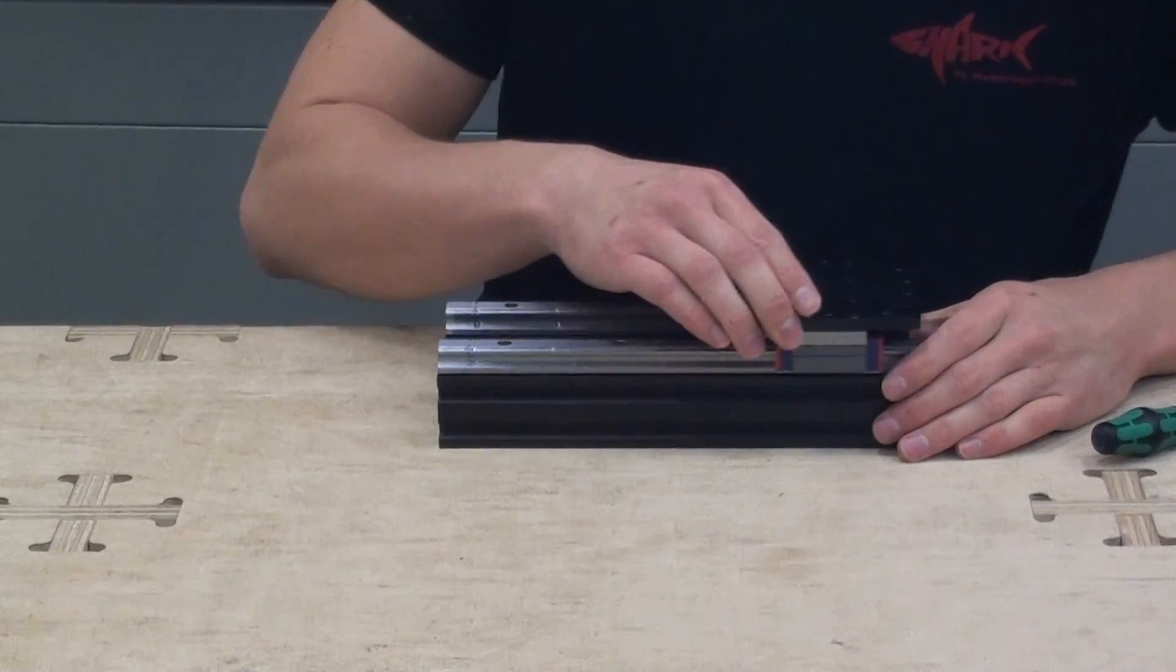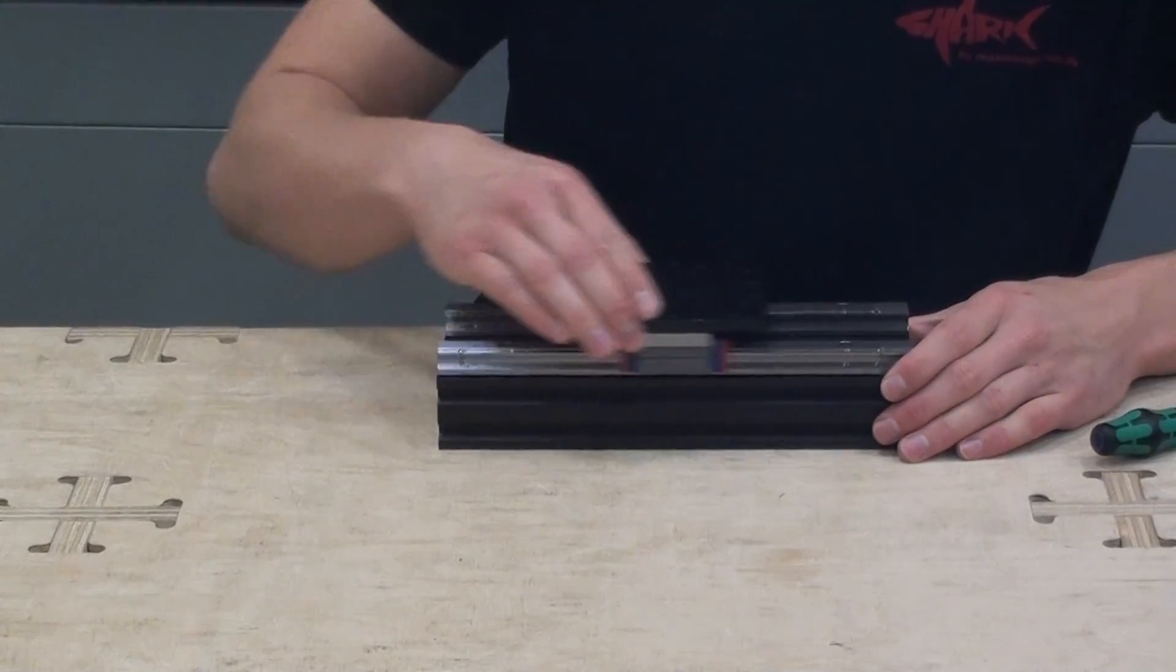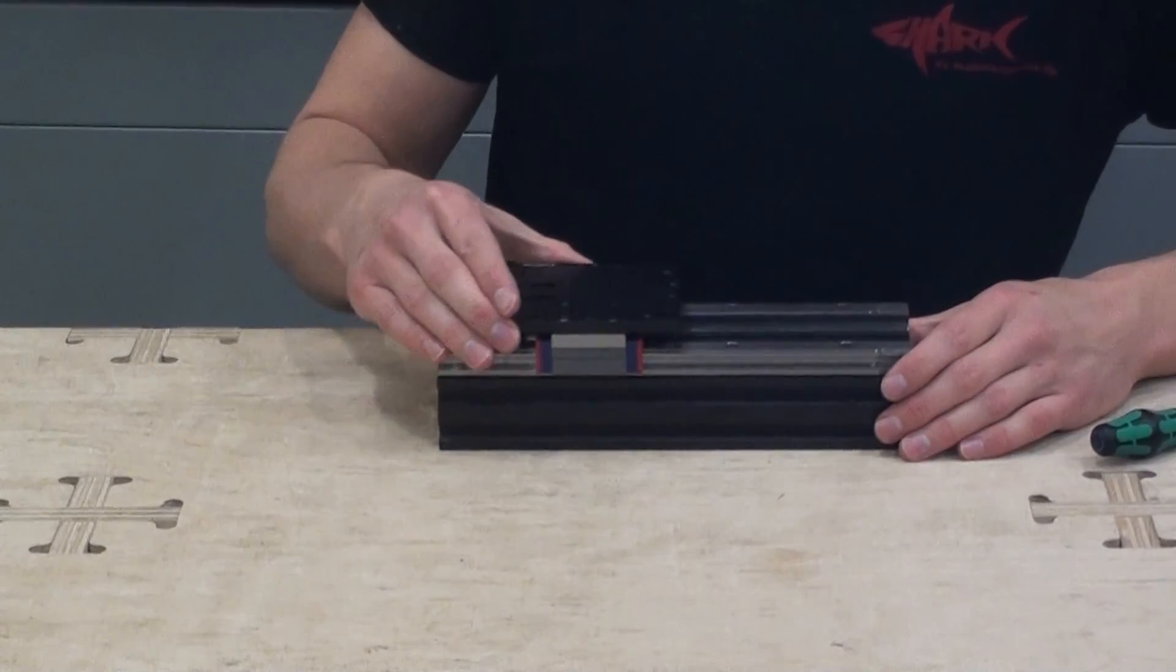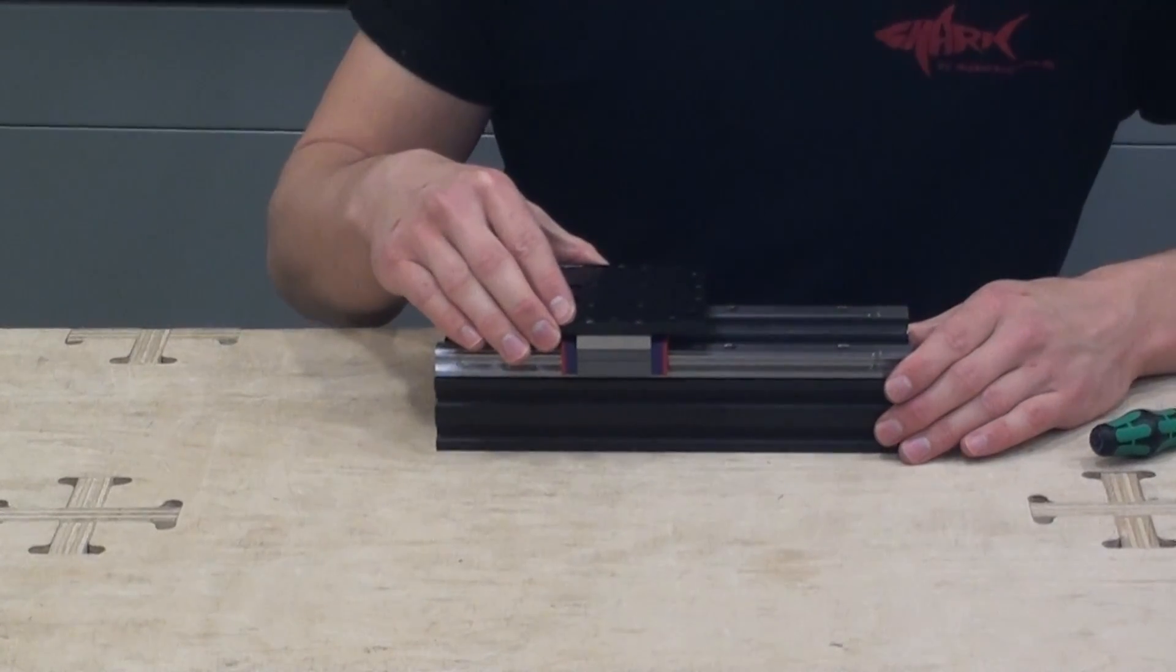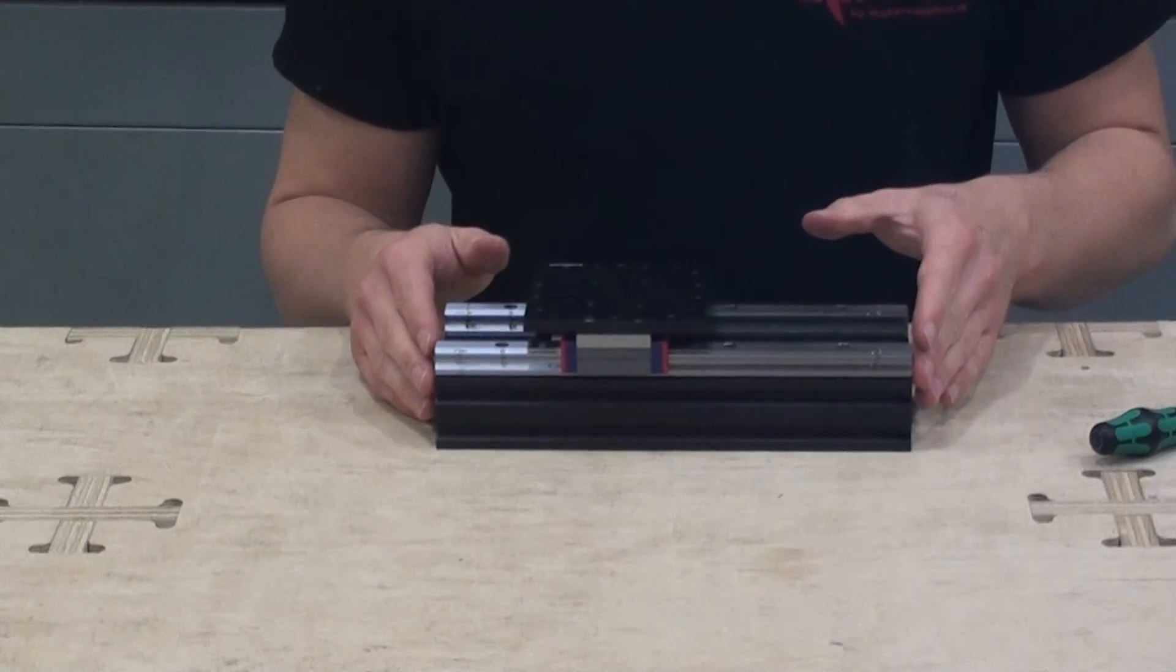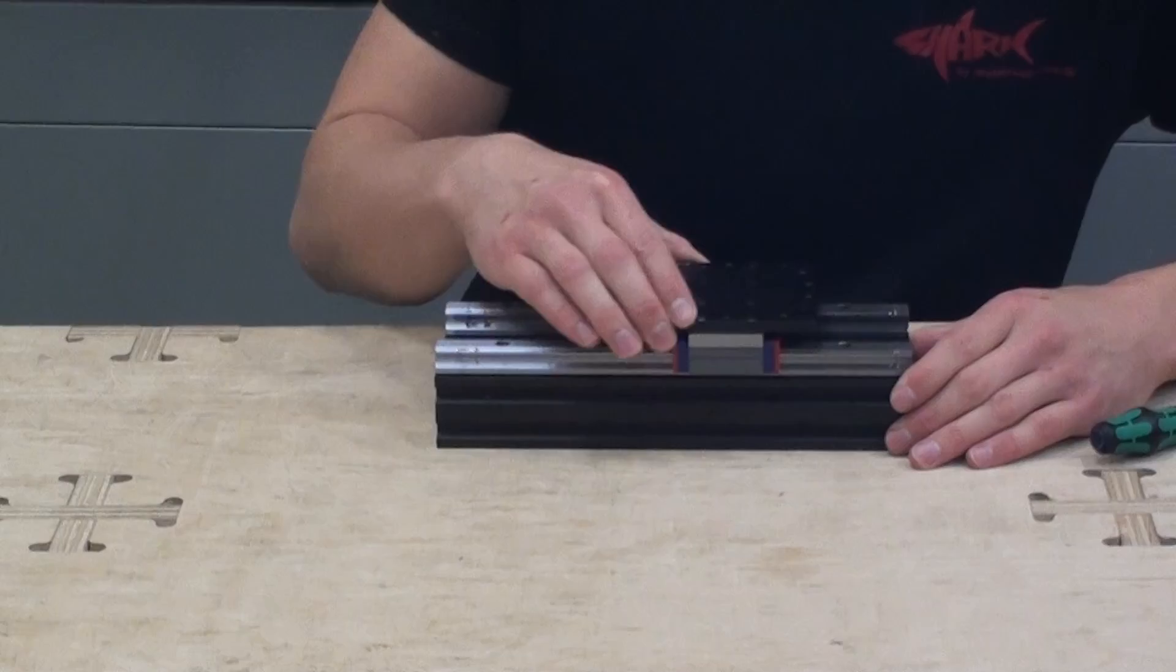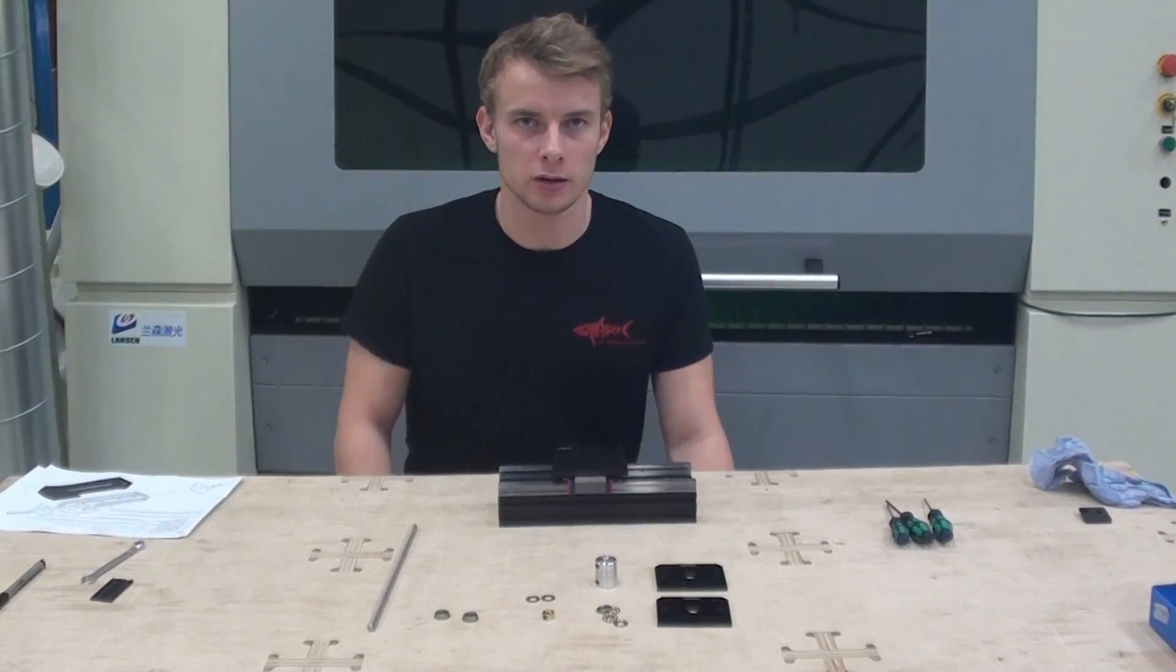At this point I can tighten the remaining screws. Now the top plate should be able to slide back and forth very smoothly with no points where there is increased friction. Also remember when moving this back and forth be very careful to not slide the linear guide blocks beyond the edge of the linear guides.